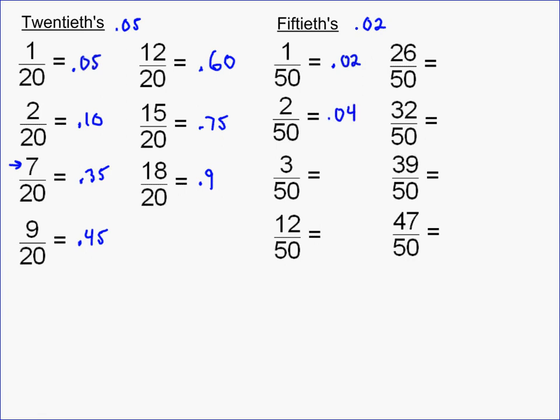12 times 2 is 24, so it becomes 0.24. And then you just multiply all these by 2 and put a decimal there. 26 times 2 is just 0.52. 32 times 2 is 0.64. 39 times 2 is 0.78. And then 47 times 2 is 94. Put a point in front of it, you get 0.94.